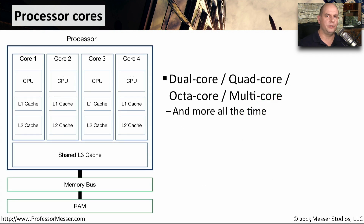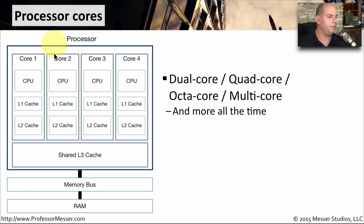Early processors in our personal computers had one single CPU core — there was one set of calculations taking place inside of that physical CPU. But these days, we've added additional cores to the CPU, and CPUs themselves have become much more complex. Here is an example of a quad-core CPU, where there are actually four cores inside of a single physical processor.